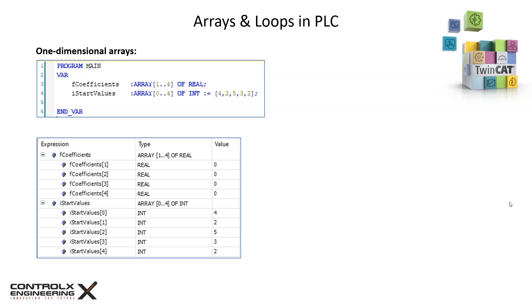This is what our array looks like during runtime. As I pointed out earlier, this array starts from index 1 to index 4, giving us four data elements, while the other array starts from index 0 to index 4, giving us five data elements. As you can see, this array has been initialized with some startup values in the declaration, while the other array is not initialized so it has all zeros at startup.